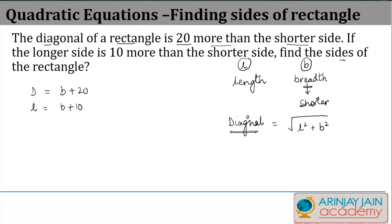We need to find the length and breadth. The diagonal equals square root of L squared plus B squared, but the diagonal is also B plus 20. So B plus 20 equals square root of (B+10)² plus B².